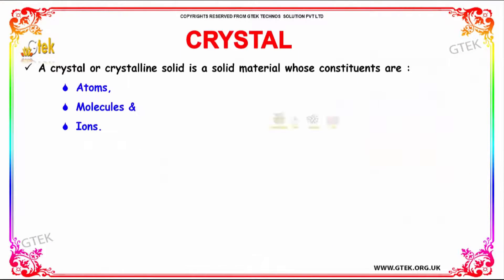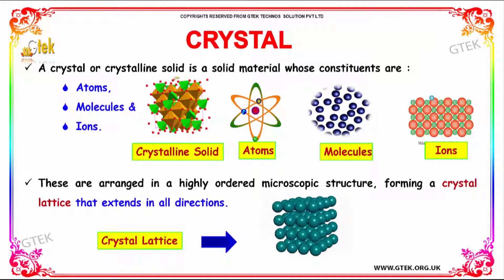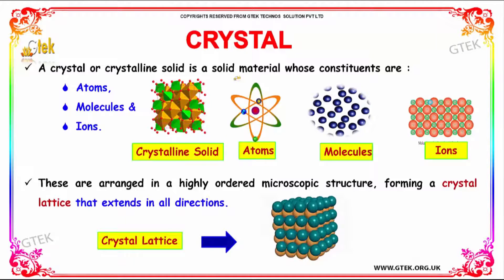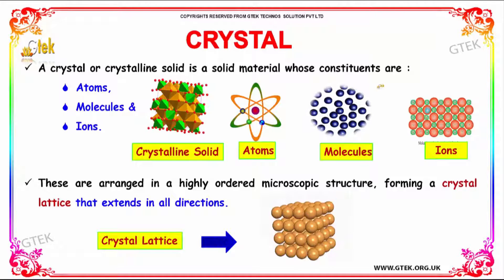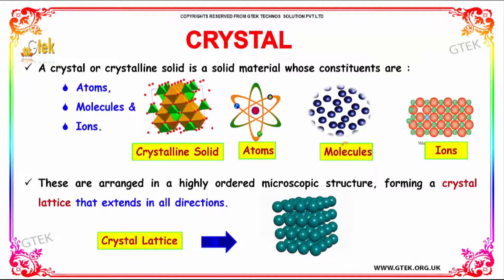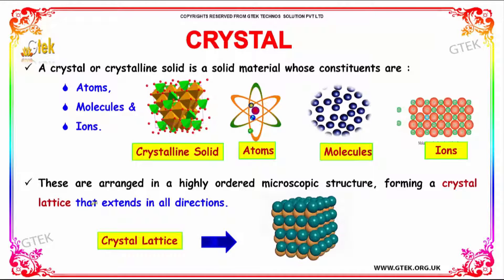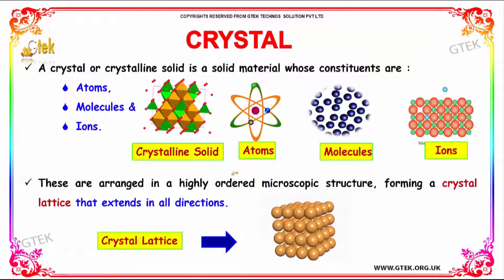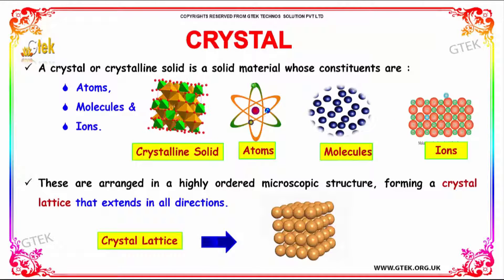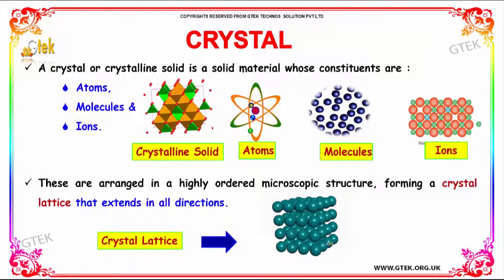A crystal or crystalline solid is a solid material whose constituents are atoms, molecules, and ions. These are arranged in a highly ordered microscopic structure forming a crystal lattice that extends in all directions.